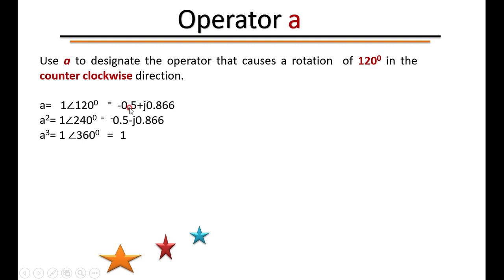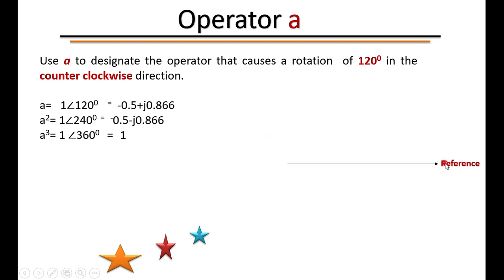Converting the operator 'a' = 1∠120° to rectangular form gives −0.5 + j0.866. If you operate 'a' twice on a vector, that becomes a², which is 1∠240°, with rectangular form −0.5 − j0.866. Operating 'a' three times gives a³ = 1∠360°, which equals 1∠0°, the reference vector — meaning it is back in phase with the reference.